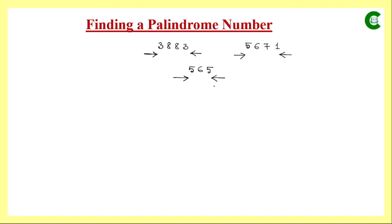This is the theoretical concept of identifying whether a given number is a palindrome or not. But if we want to do this through a program, we have to develop a logic that will be executed by our program. Before writing the program, we will represent the approach using a flowchart or algorithm. So first we will learn the logic, using the same example 565.